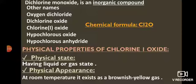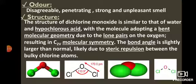Physical properties of chlorine 1 oxide: physical state — liquid or gaseous; at room temperature it is a brownish-yellow gas with a disagreeable, penetrating, strong, and unpleasant odor. Structure: dichlorine monoxide is similar to water and hypochlorous acid, adopting a bent molecular geometry due to the lone pairs on oxygen, resulting in C2v molecular symmetry. The bond angle is slightly larger than normal due to steric repulsion between the bulky chlorine atoms — the bond pair–bond pair repulsion between the two chlorine atoms bonded to oxygen widens the angle.